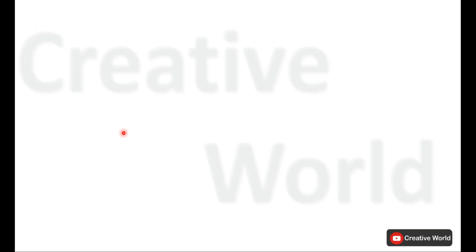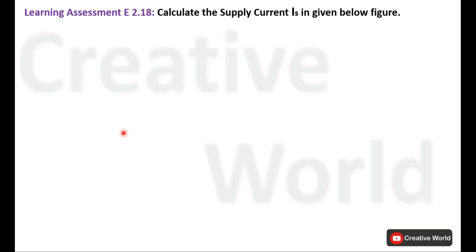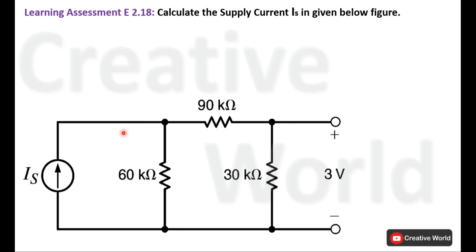Now move towards the problem. Calculate the supply current Is in the given figure. This is the circuit diagram of the problem and we have to calculate the value of Is — the supply current to this network. So without wasting time, let's proceed towards the solution.